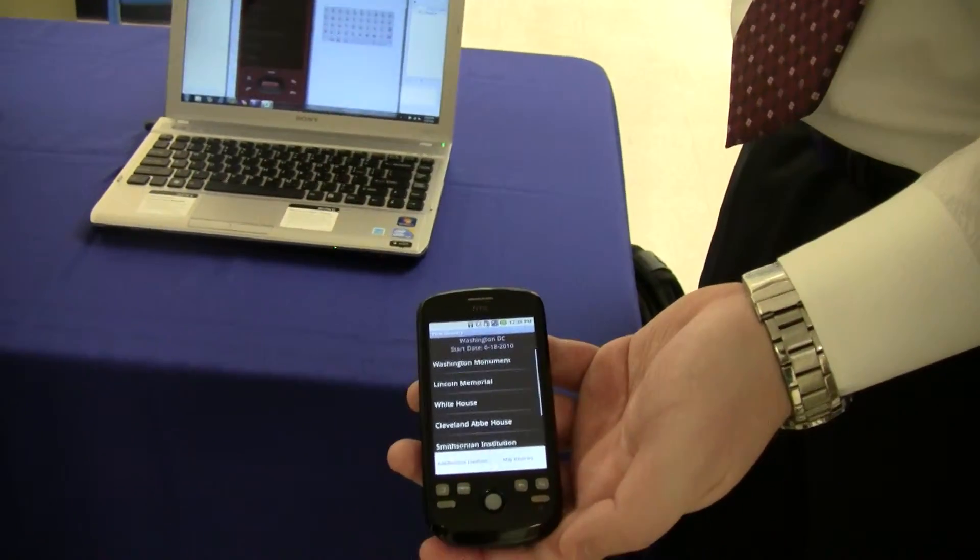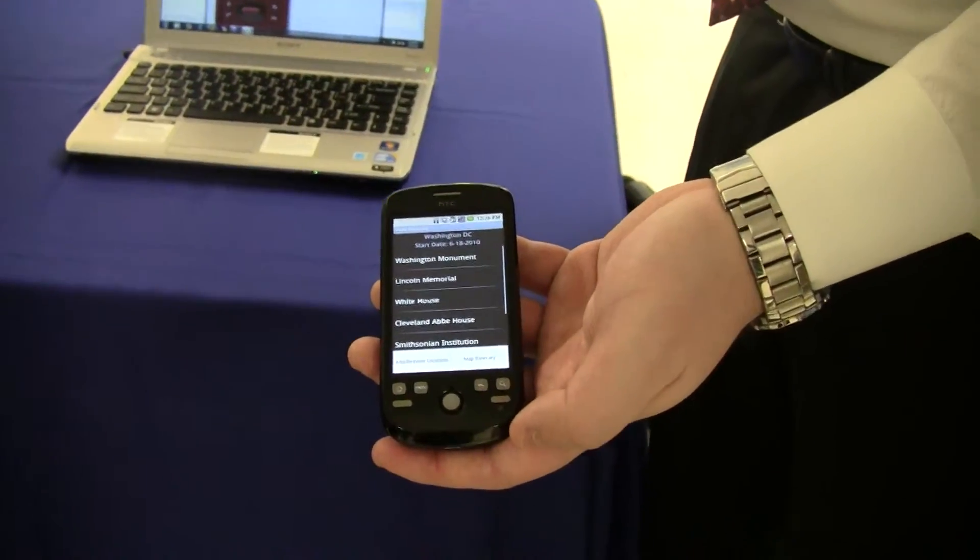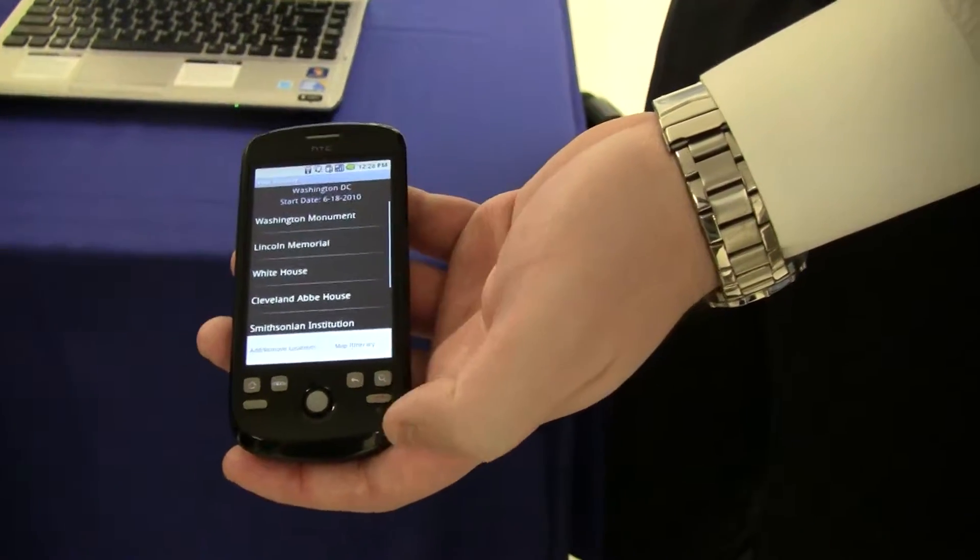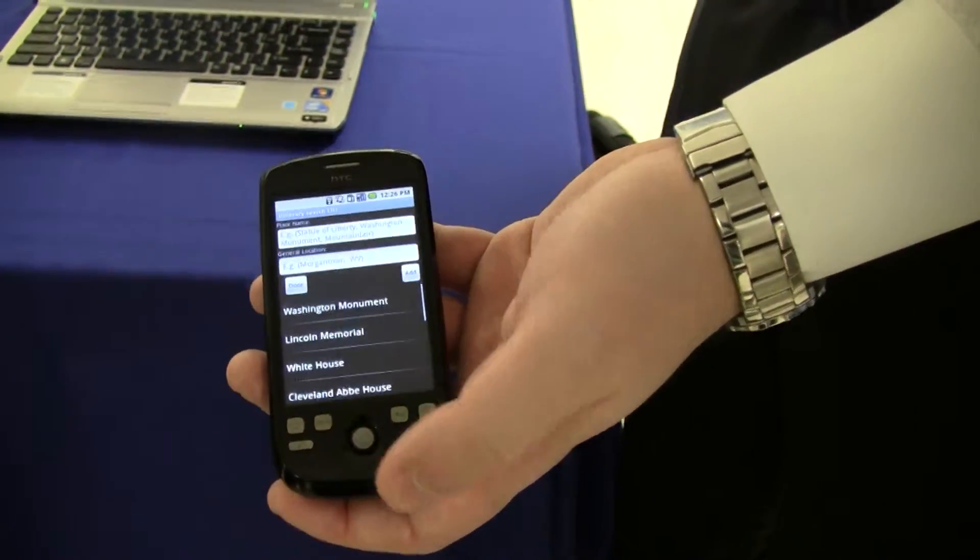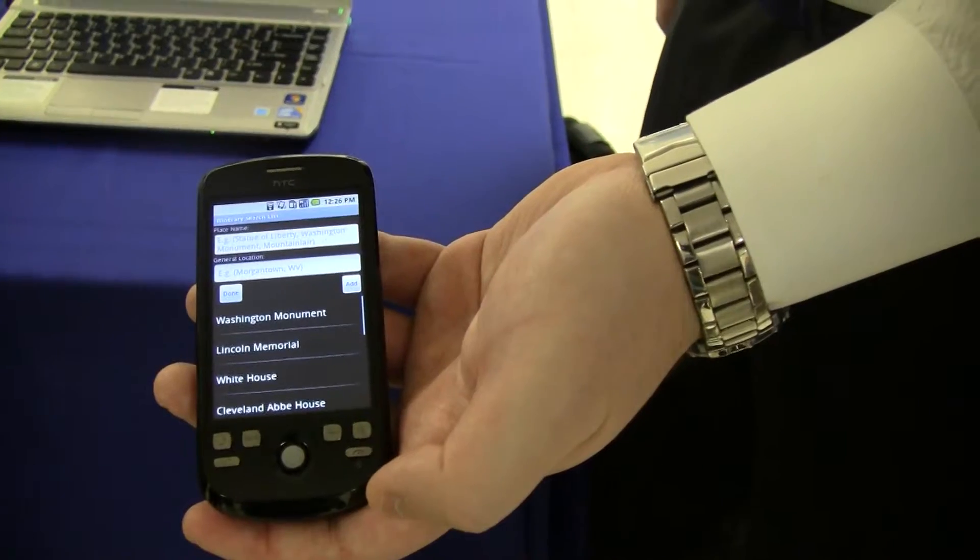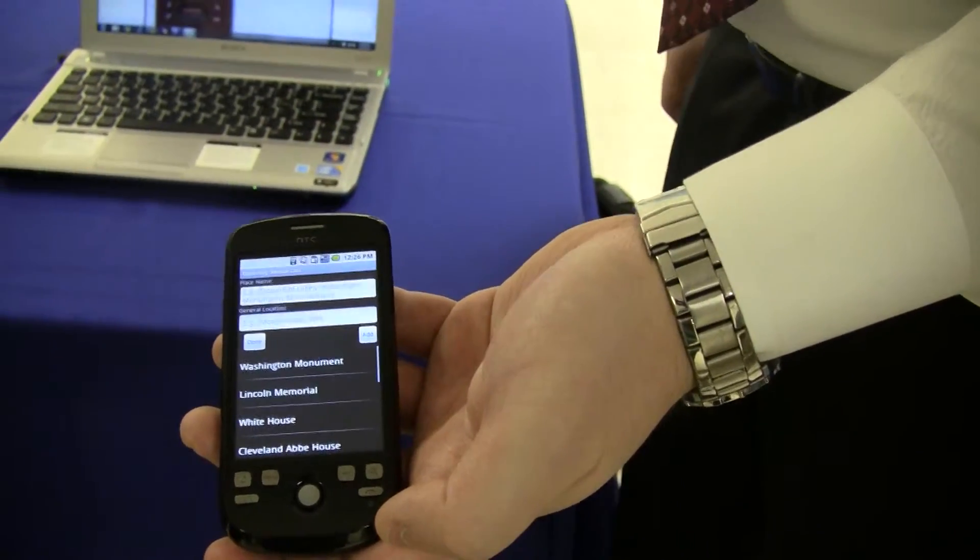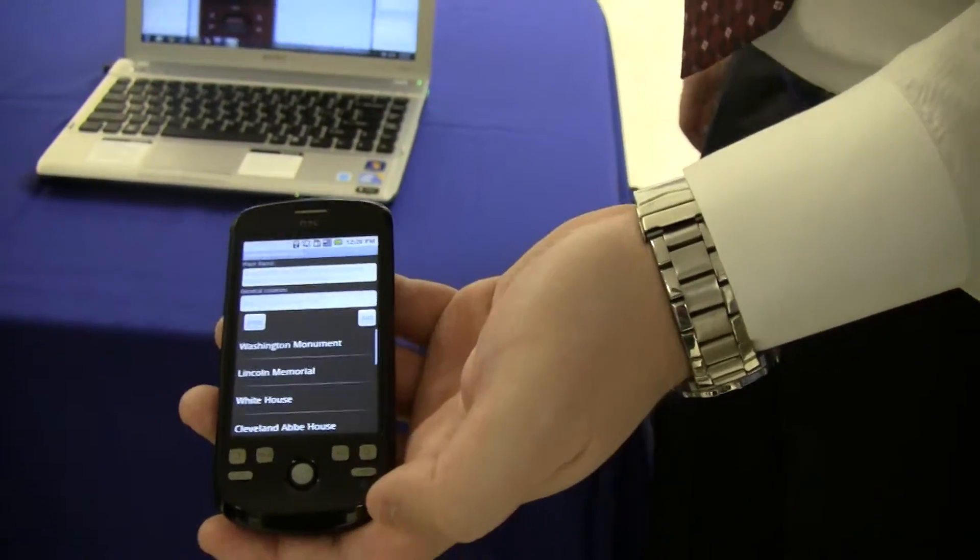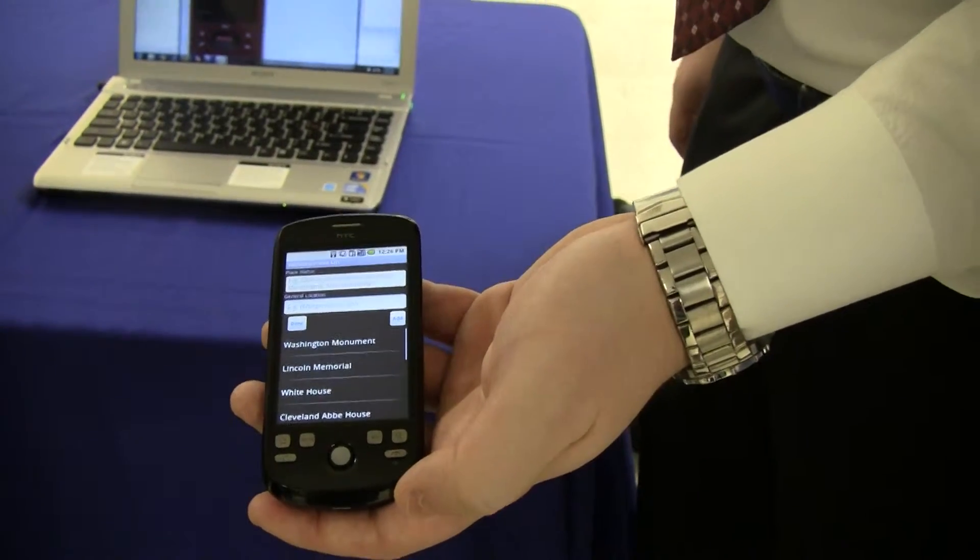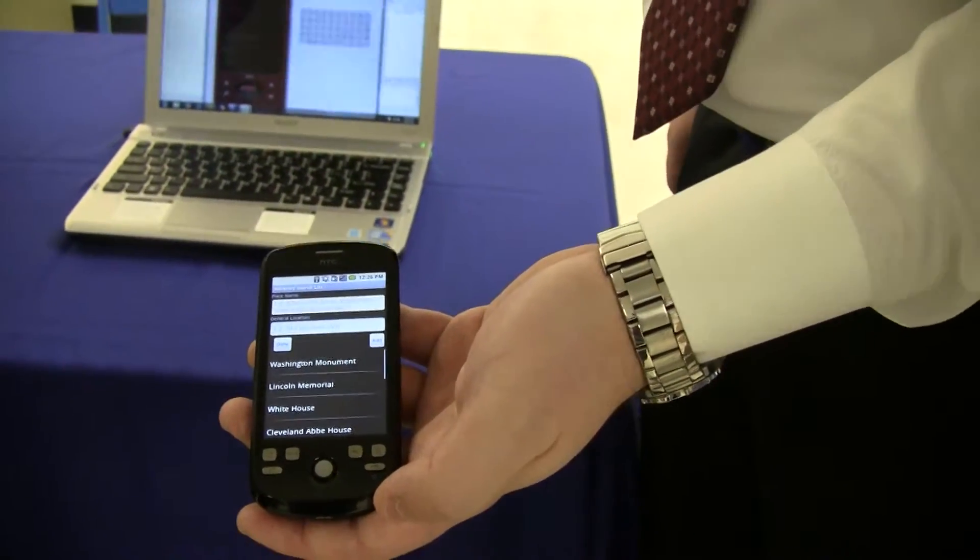If we press the menu button, we can add or remove locations from the list. And we can also map the itinerary. If we go to add a location, we input the name of the place and also its general area. And then it will search and make sure that it can find that location and add it to our list.